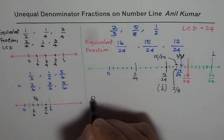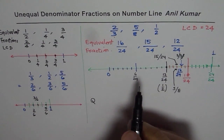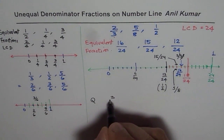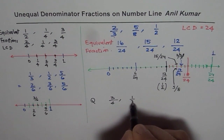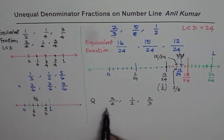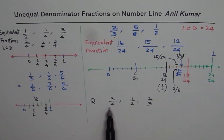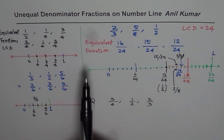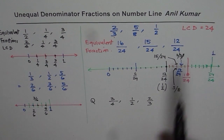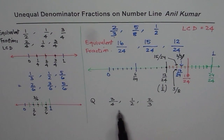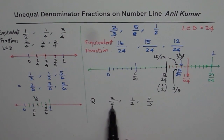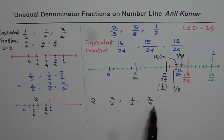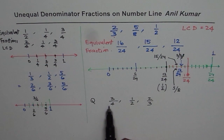Here is a question for you. Place these fractions on a number line: 3 out of 4, 1 out of 2, and 2 out of 3. They have different denominators. The steps: first, write them as equivalent fractions with the same denominator. The lowest common multiple of 4, 2, and 3 is 12, so make 12 the common denominator. Then it will be easy to place them on a number line. I hope that helps. Thank you and all the best.